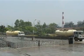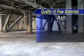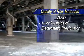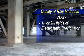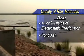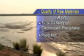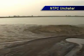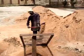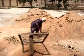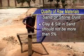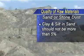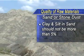Fly ash should preferably be from the first or second fields of the electrostatic precipitator. However, pond ash can also be gainfully utilised for making ash bricks. While selecting sand or stone dust, care has to be taken to ensure that deleterious materials such as clay and silt in sand or stone dust are not more than 5%.